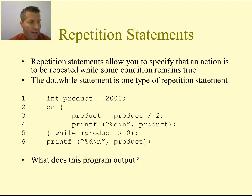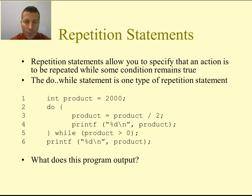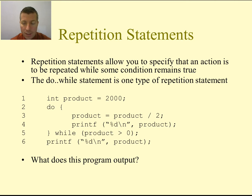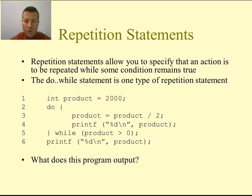Let's look at the example on the slides. On line 1, I create an int variable named product with a value of 2000. Then I have the keyword do, and I open the curly brace immediately after that. You see the closed curly brace on line 5 followed by the keyword while, open parentheses — that's where your condition goes — close the parentheses, then follow it by a semicolon. That is the syntax for a do-while loop.